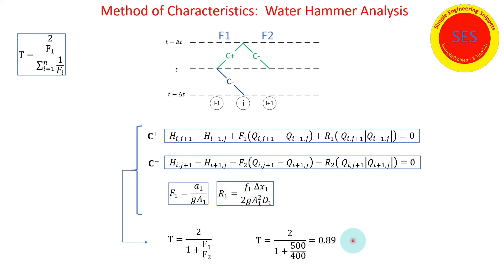So the conclusion is yes, the method of characteristics obtains the exact same transmitted and reflective wave as we would get with a more exact solution using the Joukowsky equation.